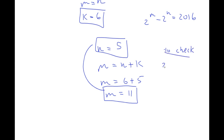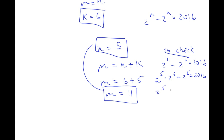Now we have both values for n and m, so let's check. m is 11, so we have 2 to the power of 11 minus 2 to the power of 5 equals 2016. I'll rewrite 2 to the power of 11 as 2 to the power of 5 times 2 to the power of 6. So I have that minus 2 to the power of 5, equals 2016. Factoring out 2 to the power of 5 gives 2 to the power of 5 times 2 to the power of 6 minus 1. 2 to the power of 5 is 32, 2 to the power of 6 is 64, and 64 minus 1 is 63. So 32 times 63 equals 2016, confirming our answer.